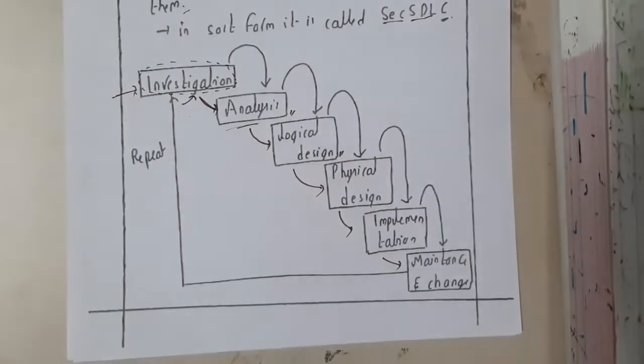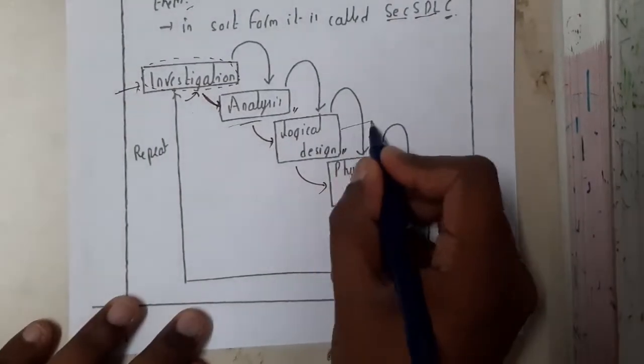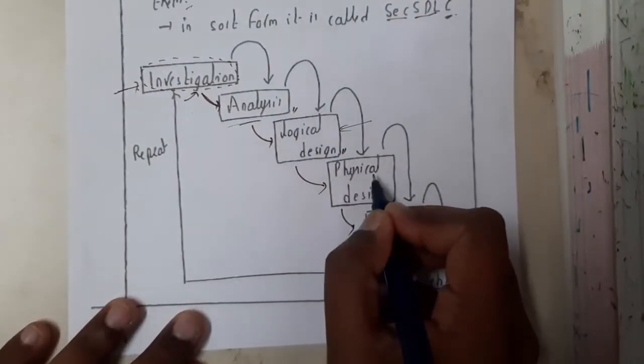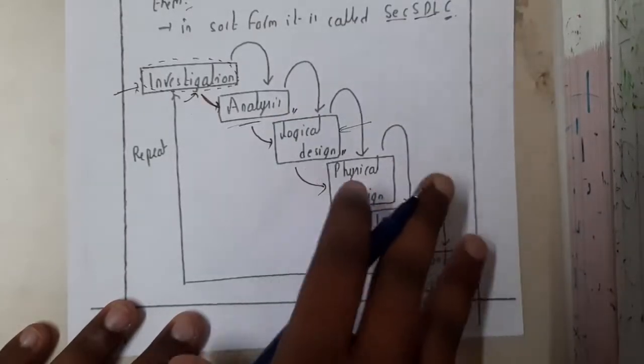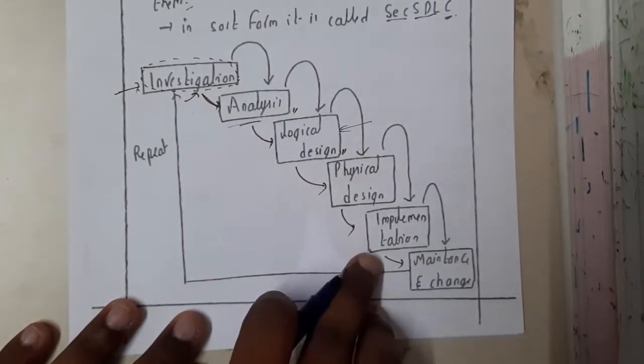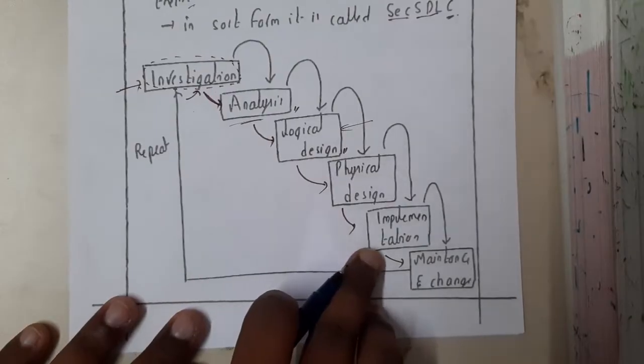You will be designing that in your real time. So once it is done you will be starting your implementation. Implementation is nothing but here you started the physical design, like models, dummy models and all those things. Here implementation means you will be giving the project to someone, some other company or you will be doing the project on your own and you will be successfully implementing it.